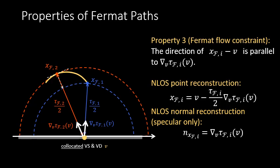The point of intersection will be the point on the non-line-of-sight surface. Additionally, if the Fermat path is specular, the gradient also gives us the surface normal at the non-line-of-sight point.